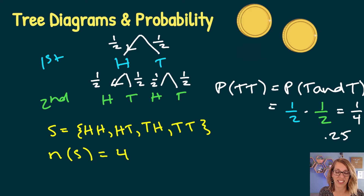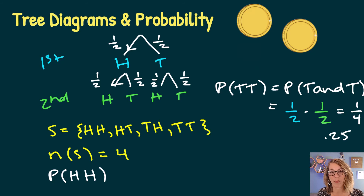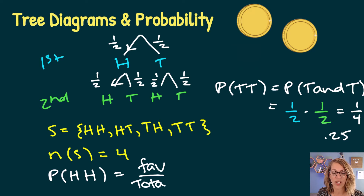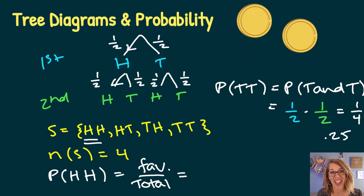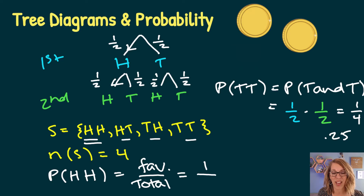Now let's match that with the sample space. For the probability of heads and heads, I can either follow the tree diagram or count favorable outcomes over total outcomes. There is just one heads-heads outcome in my sample space, and there are four total possible outcomes, giving me one out of four — 0.25, or 25%.